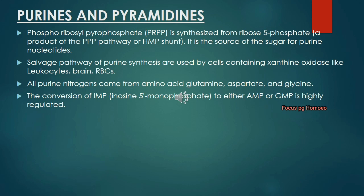Phosphoribosyl pyrophosphate is synthesized from ribose 5-phosphate. It is the product of the pentose phosphate pathway or HMP shunt, and it is the source of sugar for purine nucleotides.